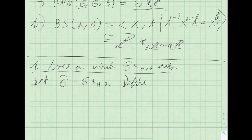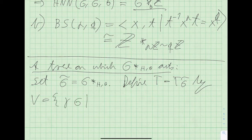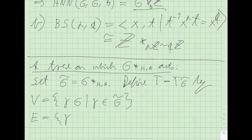Let G-tilde denote our HNN extension. We define a graph T — which one has to prove is actually a tree — by choosing the vertices to be the left cosets of the original group G inside the HNN extension, and the edges to be the left cosets of the subgroup H inside the HNN extension.